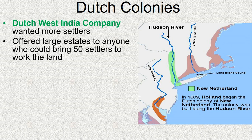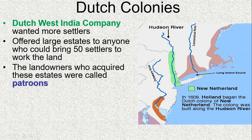The Dutch East India Company also had a sister company established when they came to settle in the North American colonies — the Dutch West India Company. They encouraged settlers to their colony by offering land to those who would pay for others to come and establish the land. They settled a lot of territory right up the Hudson River, and this system was called the patroon system, very much like the headright system used in Jamestown.